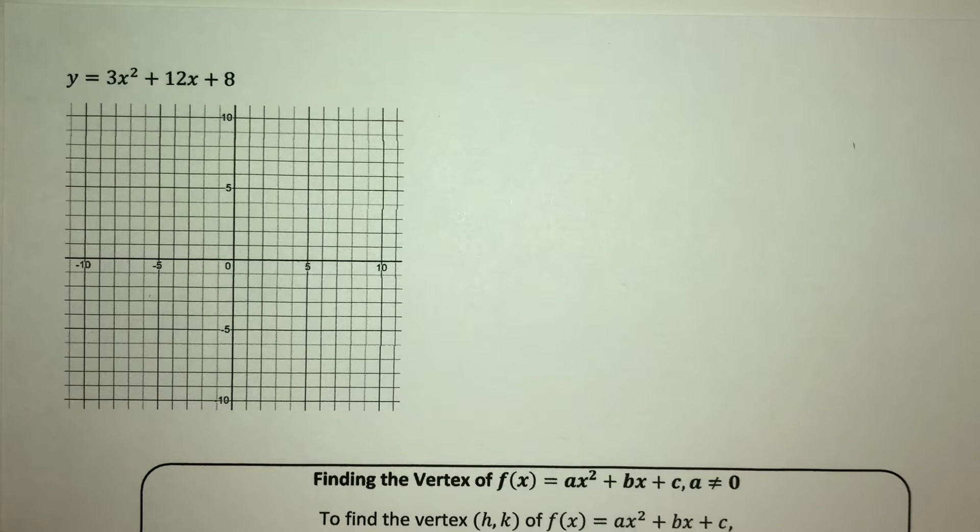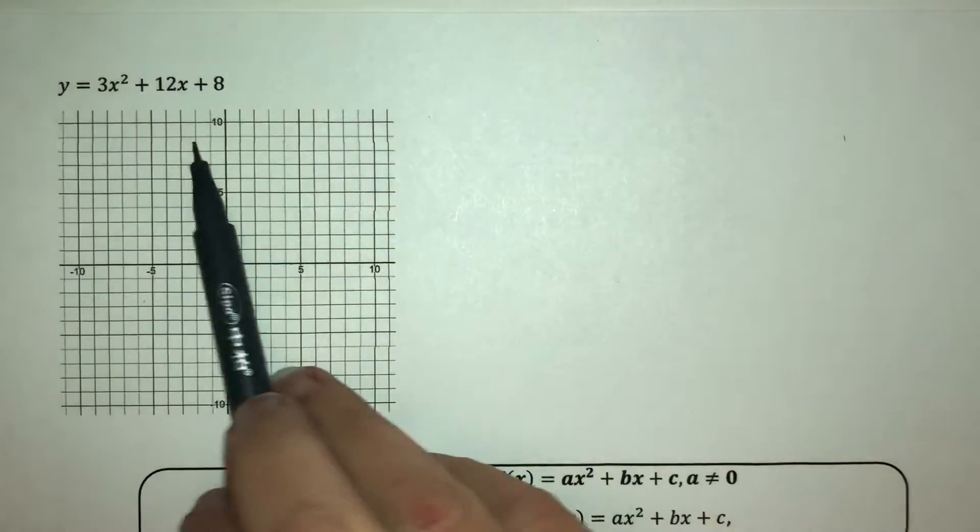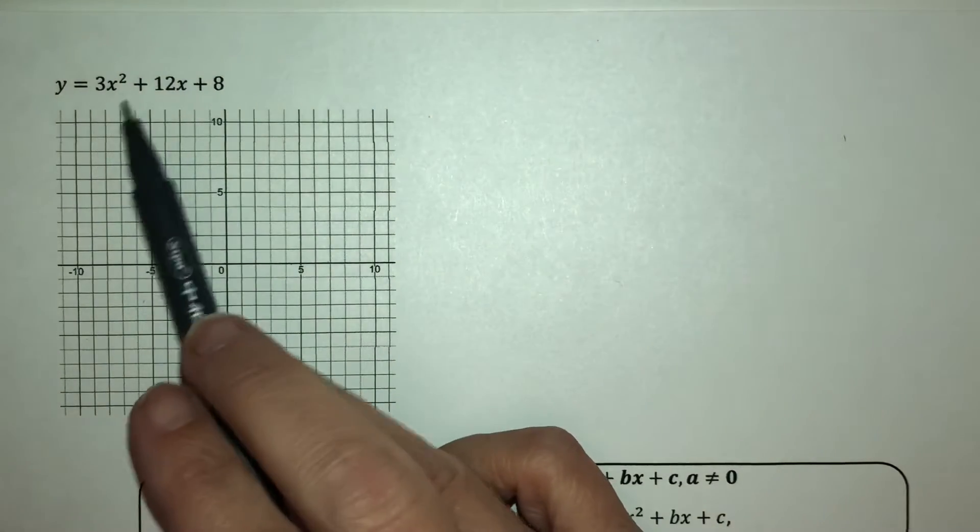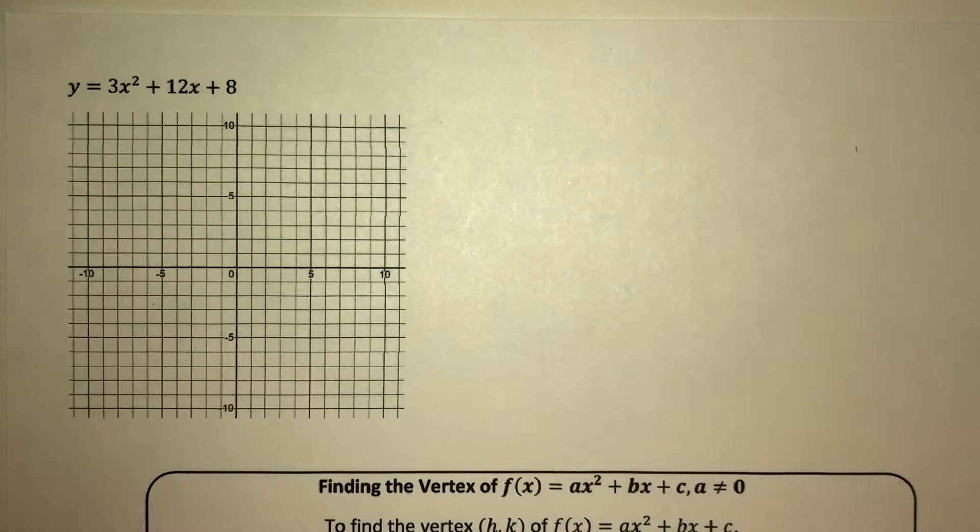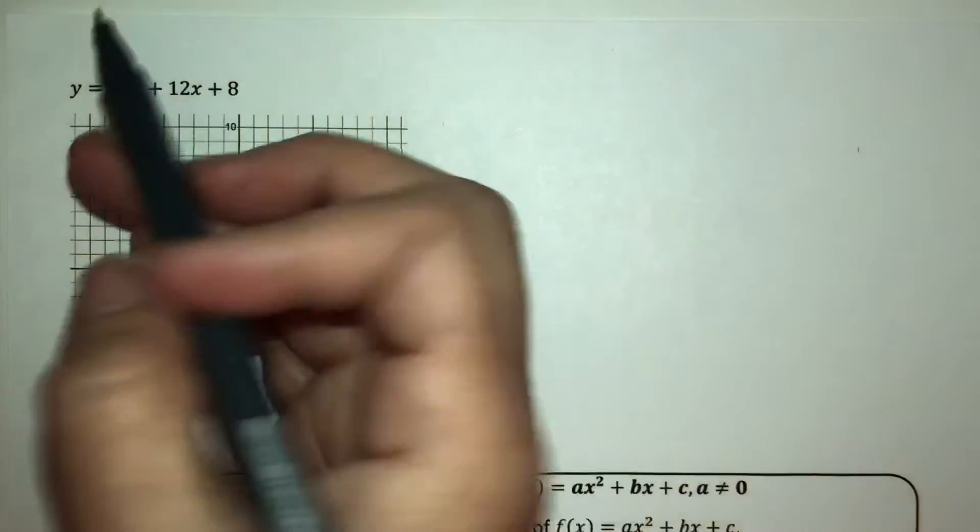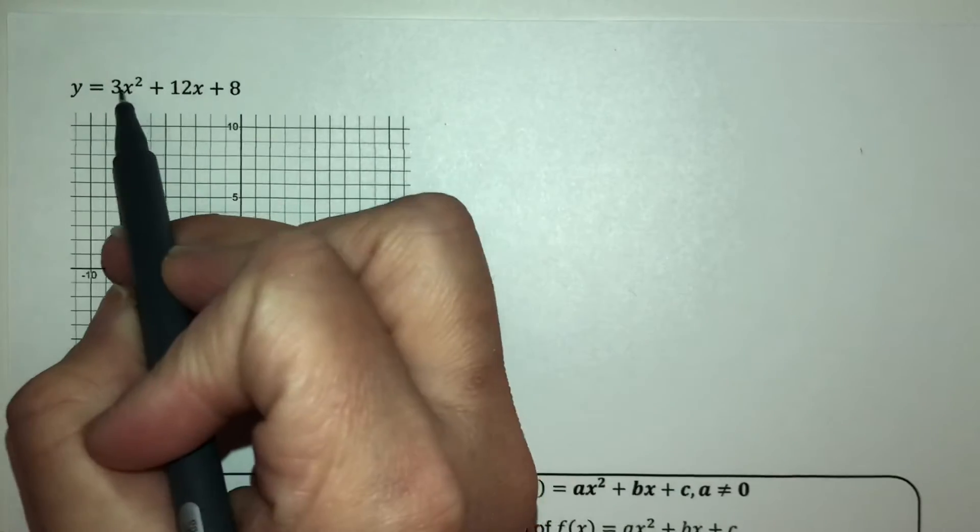This is part 3 of section 2.1. We want to graph this and put it into standard form before we graph it so we can read off our vertex. Okay, so to complete the square on this, I'm going to need to divide everything by 3.